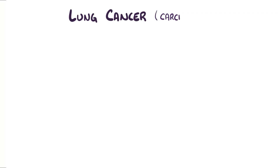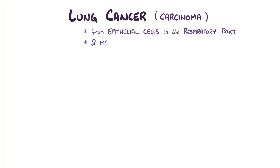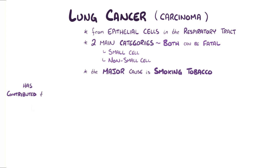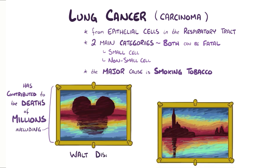Lung cancer, or lung carcinoma, is the uncontrolled division of epithelial cells which line the respiratory tract. There are two main categories of lung cancer — small cell and non-small cell — which depend on the type of epithelial cell that's dividing. Both types can be fatal, especially if the cancerous cells aggressively spread and establish secondary sites of cancer in other tissues. The major cause of lung cancer is smoking tobacco products, and it's contributed to the deaths of millions of people, including famous individuals like Walt Disney and Claude Monet.